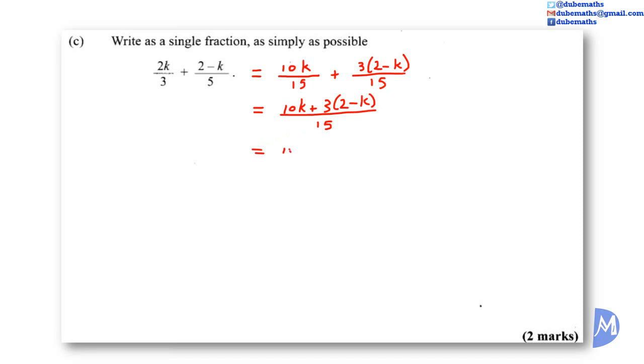Expand in brackets. Positive 3 multiplied by 2 is positive 6. Positive 3 multiplied by negative K is negative 3K. 10K subtract 3K is equal to 7K plus 6 over 15.